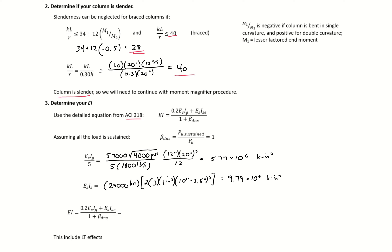We can plug this into our EI expression. We get 5.77 times 10^6 plus 9.79 times 10^6 divided by 1 plus beta_dns. We're assuming that all of the load is sustained.